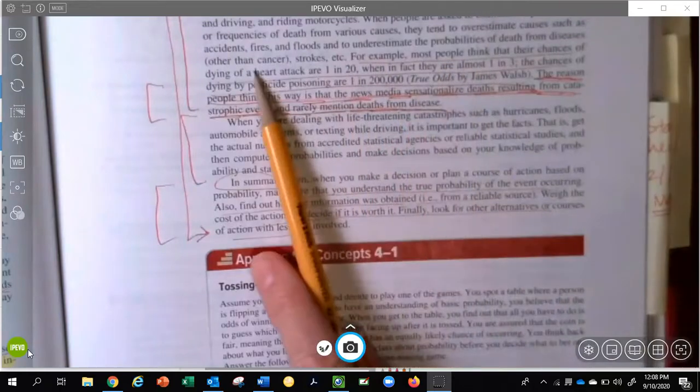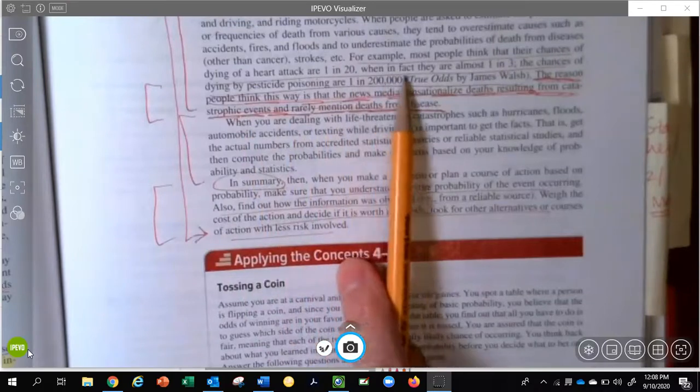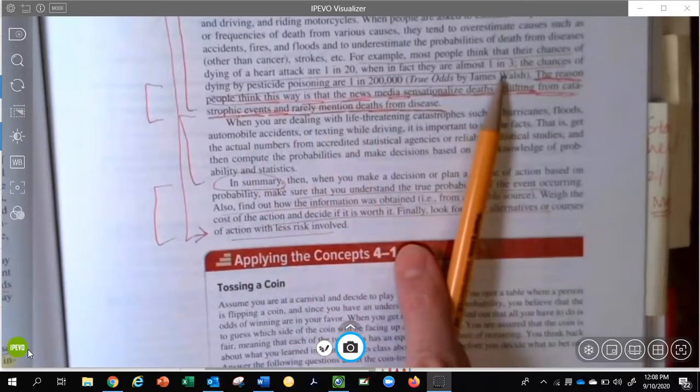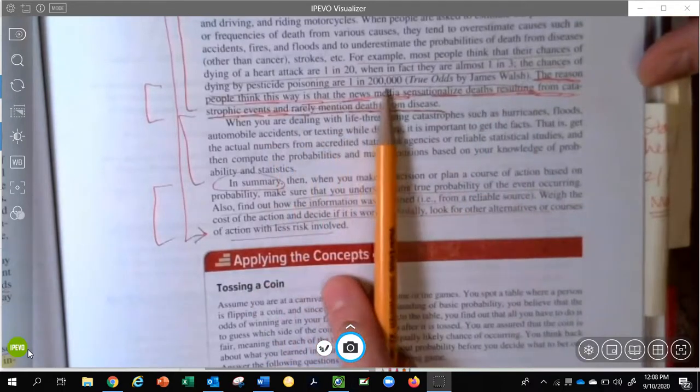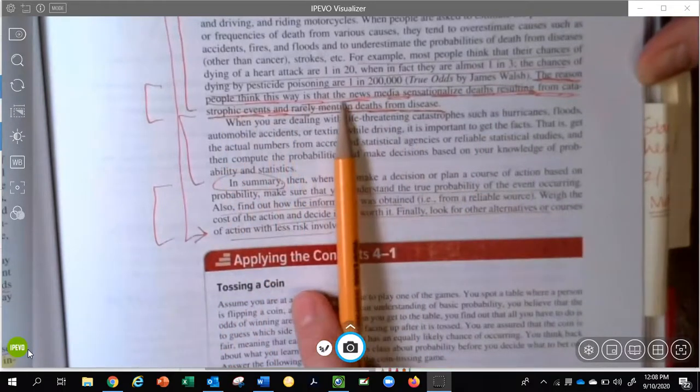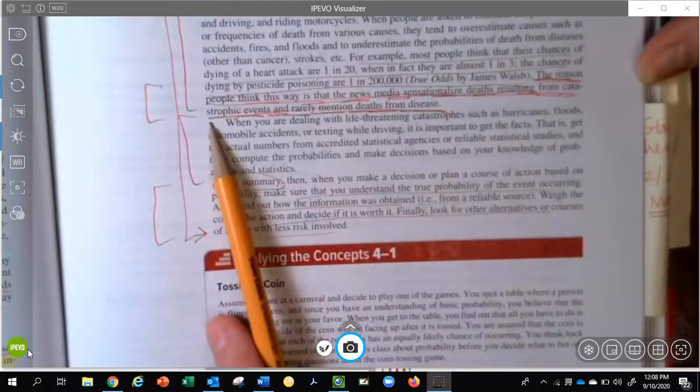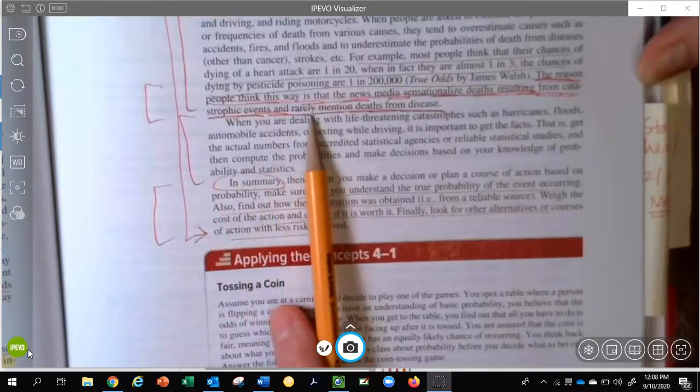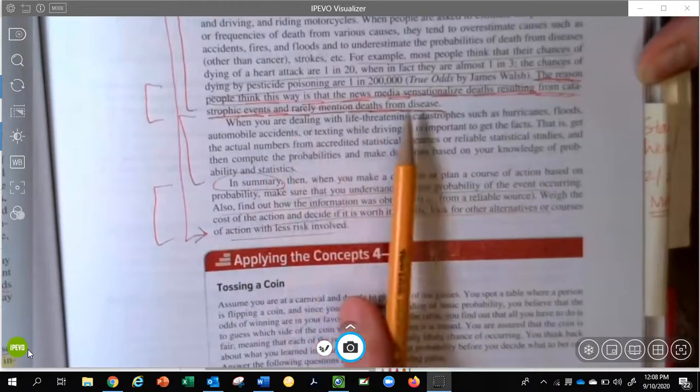Most people think that their chances of dying of a heart attack are 1 in 20, when in fact they're almost 1 in 3. Yikes. The chances of dying by pesticide poisoning are 1 in 200,000. The reason people think this way is that the news media sensationalize deaths resulting from catastrophic events and rarely mention deaths from disease.